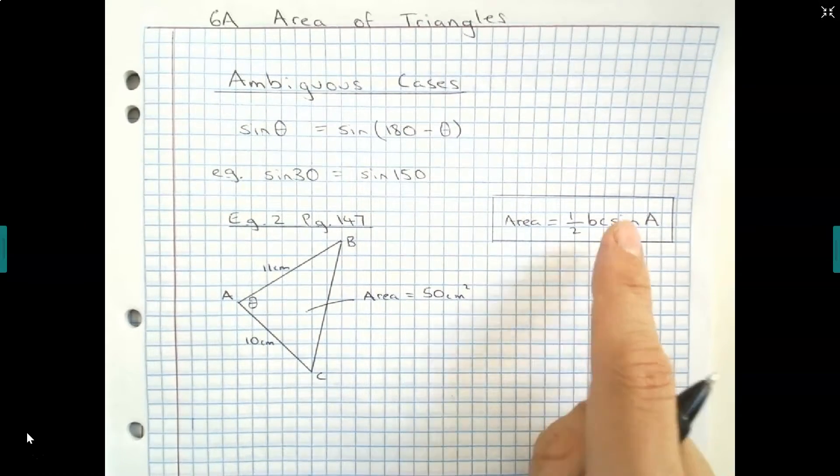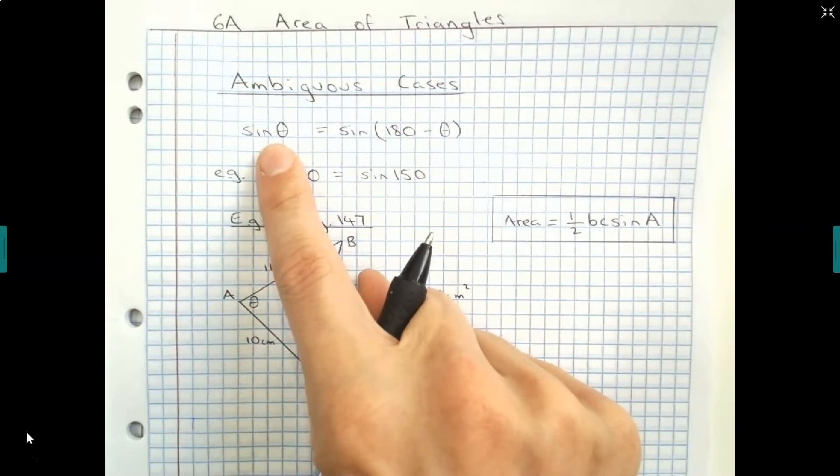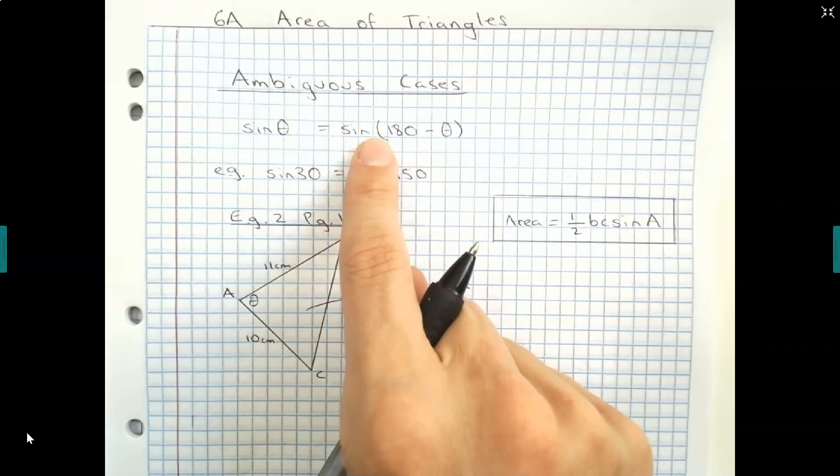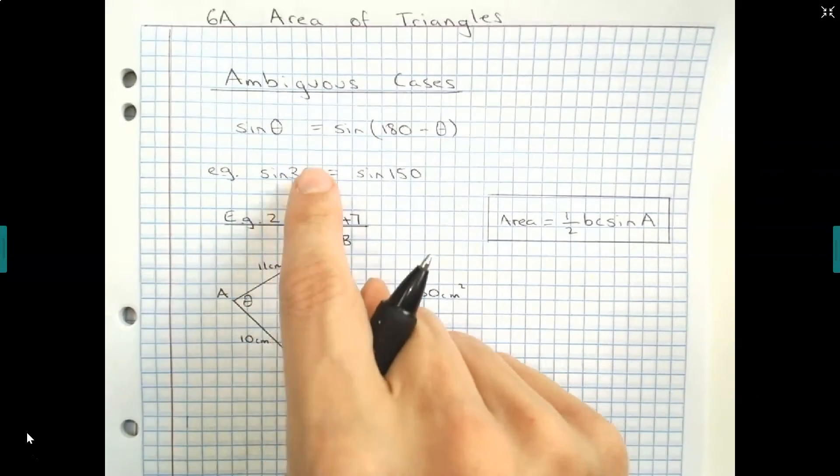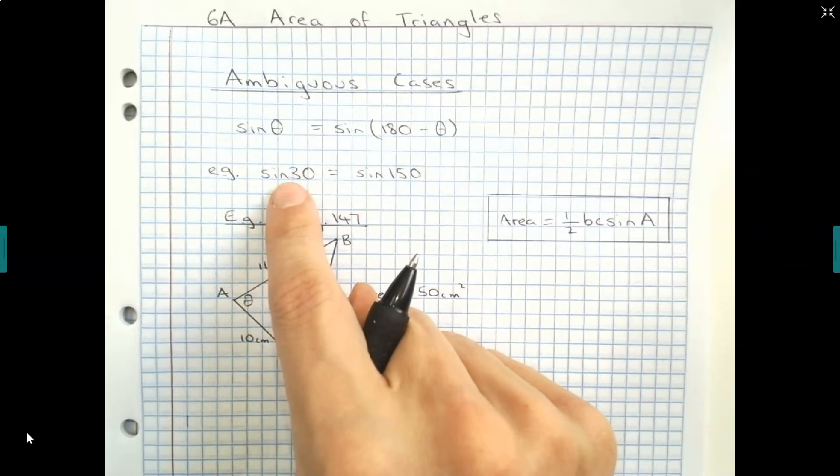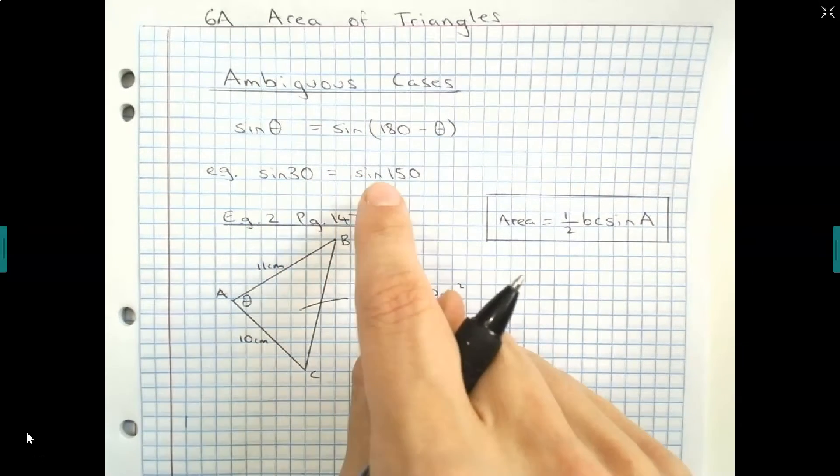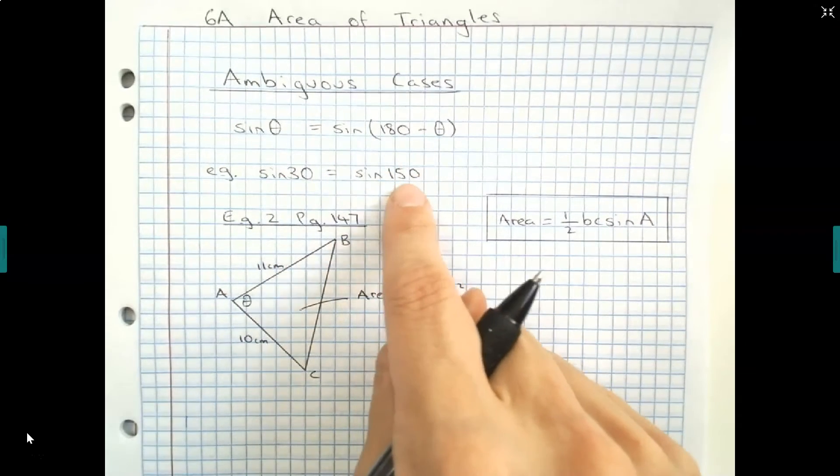Now, something important to realize is that sine of theta is actually always equal to sine of 180 minus theta. So therefore the numerical value of sine 30 is actually equal to sine 150.